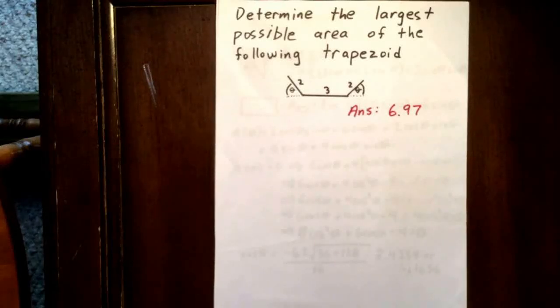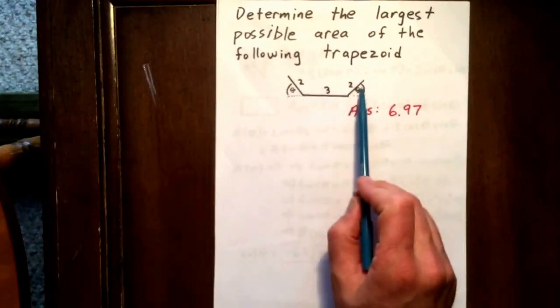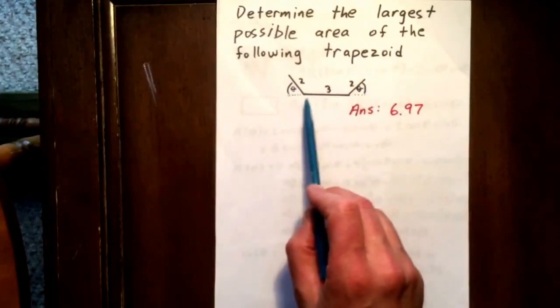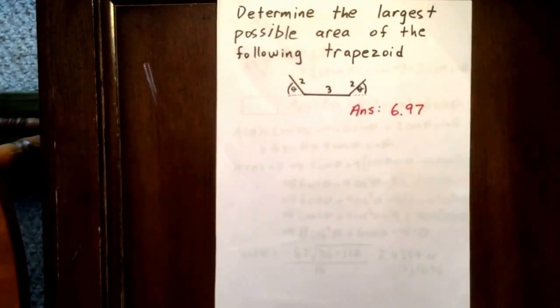For this question, we're going to determine the largest possible area of the trapezoid given. We have an angle of theta, an angle of theta, and side lengths here of 2 and 2, and a side length here of 3.